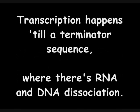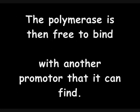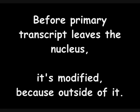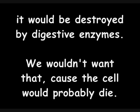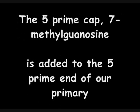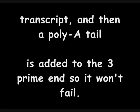Transcription happens until a terminator sequence, where there's RNA and DNA dissociation. The polymerase is then free to bind with another promoter. Before the primary transcript leaves the nucleus, it's modified because outside of it, it would be destroyed by digestive enzymes. The five prime cap — seven methylguanosine — is added to the five prime end, and a poly-A tail is added to the three prime end.